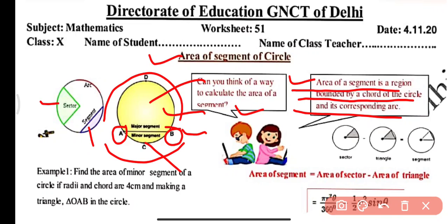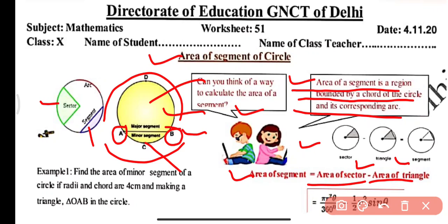Now the question is: how do we calculate the area of a segment? We have already discussed the area of a sector in the previous video. The key formula is: area of segment = area of sector minus area of triangle. So if area of segment equals area of sector minus area of triangle, we need to know how to find the area of triangle.